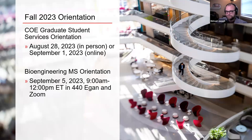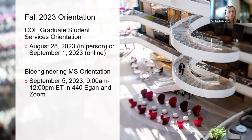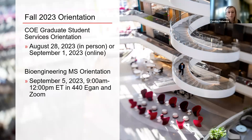Here's an orientation schedule. We have a college of engineering graduate student services orientation with an in-person event on August 28th and an online event on September 1st. That will introduce you to the wider college and university community. Then we have a department-specific master's orientation with Professor Yagley and myself on September 5th in the morning. Across those two sessions, that will give you everything you need to start your program successfully.